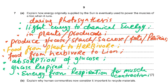The wording for your answer: during photosynthesis, light energy is converted to chemical energy; plants produce glucose, starch, or sucrose. Food passes from plant to herbivore, then from herbivore to lion. Glucose is absorbed into the blood and transported to body cells. In each cell, glucose is respired and the energy released from respiration is used for muscle contraction.